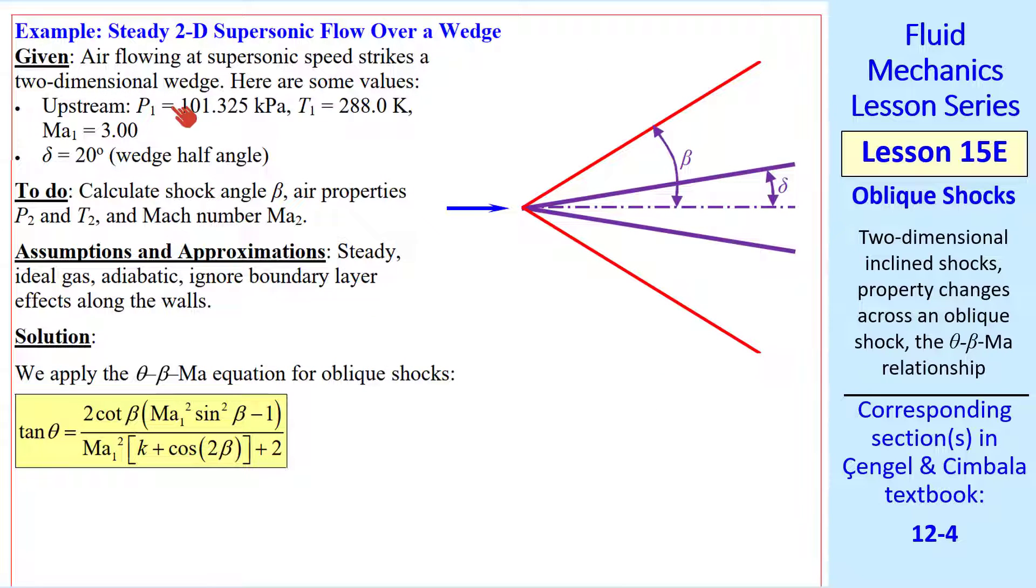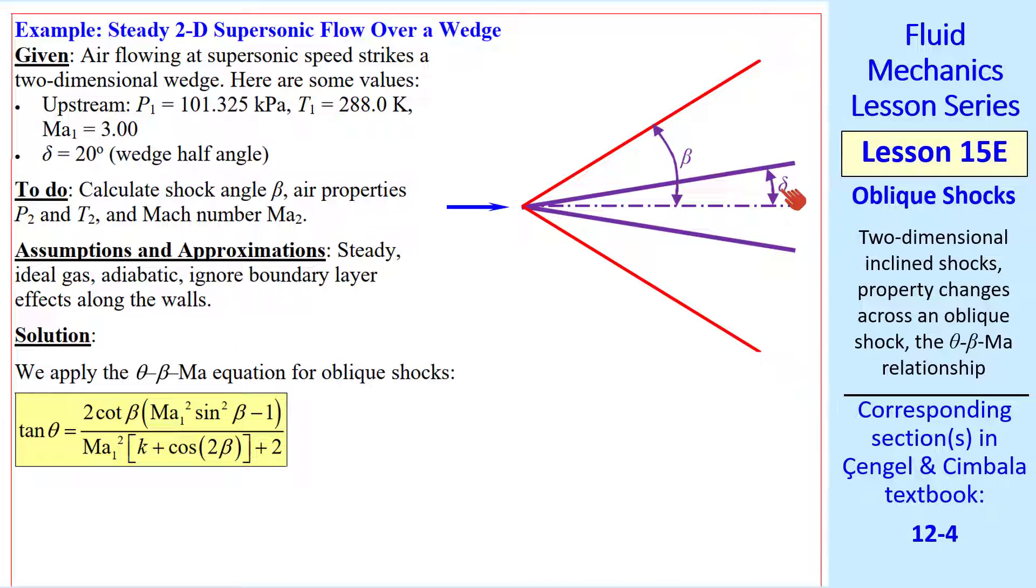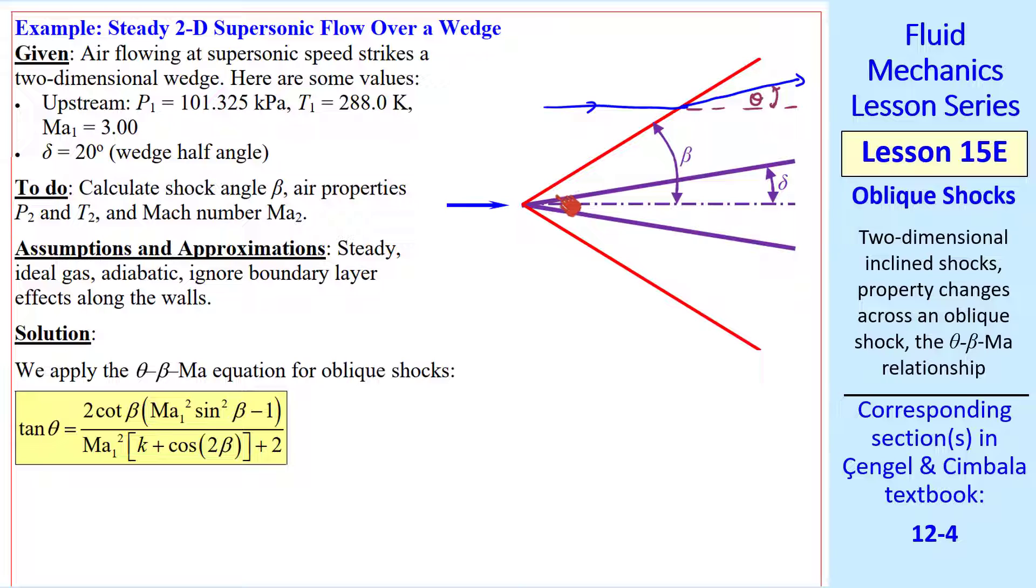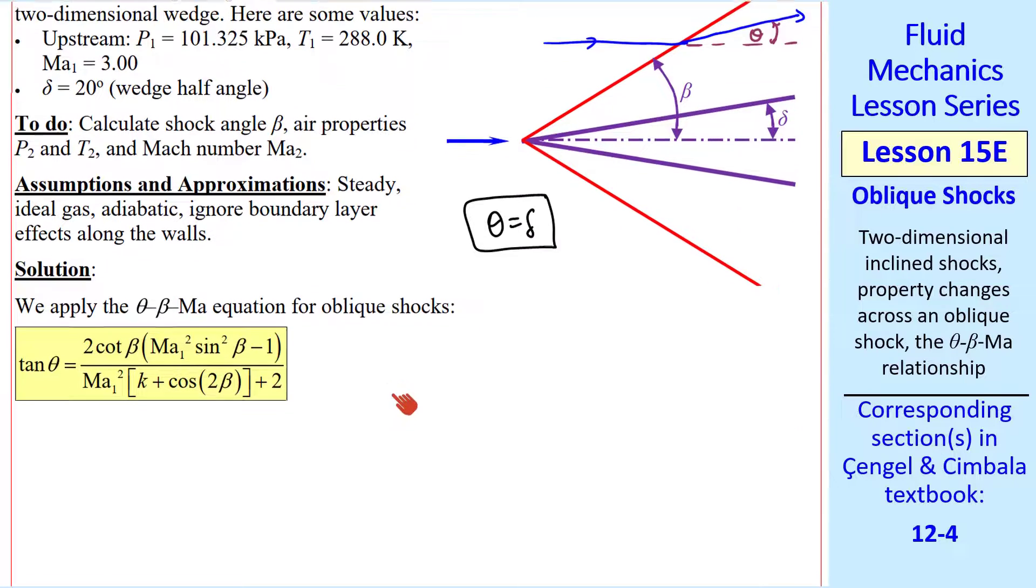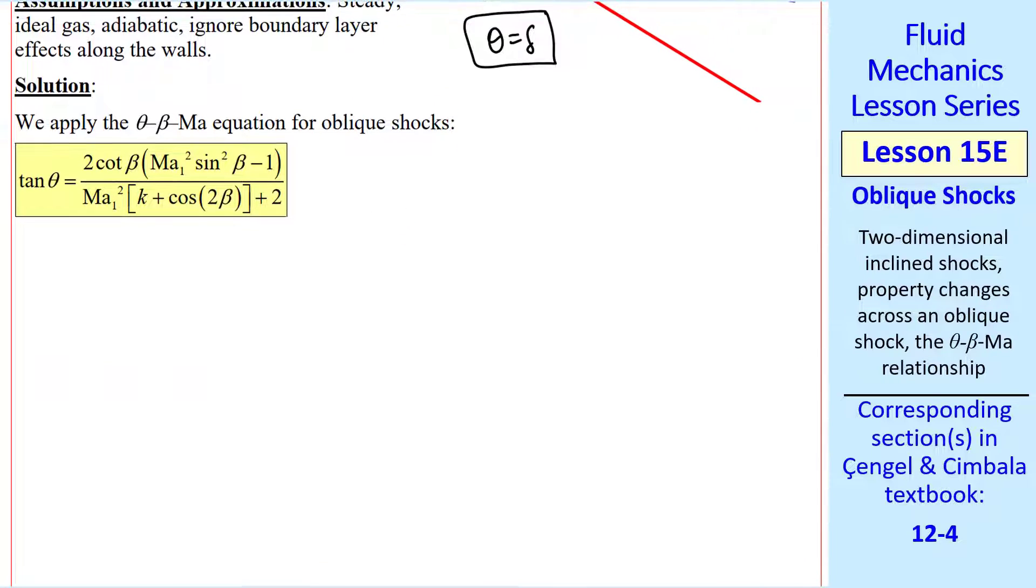Let's do another example. It's really the same problem as before, except now I give the wedge half angle instead of beta. We call the wedge half angle delta here, but since we're ignoring boundary layer displacement effects along the wall, theta must equal delta. Here we need to calculate angle beta, and then we can find the air properties downstream of the shock. We have to apply the theta beta Mach number equation again, but we must solve it implicitly for beta. We'll have to iterate using, for example, the false position method that I described in a previous lesson.